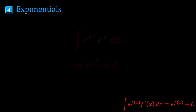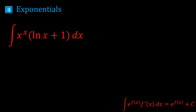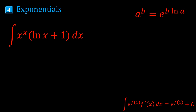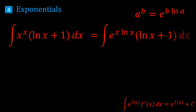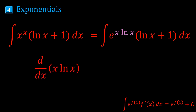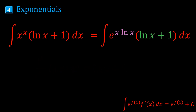The next example is a bit strange because we have x^x. When the exponent is a function of x, you want the base to be a number like e, using the fact that a^b = e^(b ln a). So x^x = e^(x ln x). Now we have e raised to some function, so we check its derivative using the product rule: (1)(ln x) + (x)(1/x) = ln x + 1. We have that being multiplied here, so the answer is e^(x ln x), which is just x^x plus c.